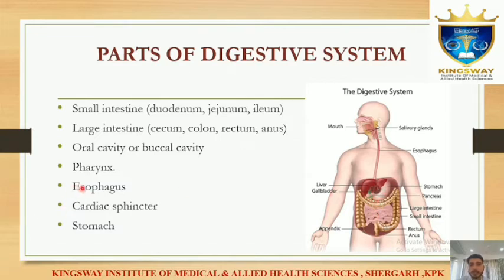As you can see, the oral cavity comes first, followed by the esophagus, then the stomach. After that, going downward, we have the small intestine and large intestine.